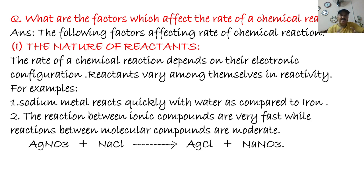Factor number one: the nature of reactants. The rate of a chemical reaction depends on the electronic configuration of the reactants — reactions vary among themselves in reactivity. For example, sodium metal reacts quickly with water compared to iron. Reactions between ionic compounds are very fast, while reactions between molecular compounds are moderate. For example, AgNO3 plus NaCl gives AgCl plus NaNO3 — this reaction takes place faster.